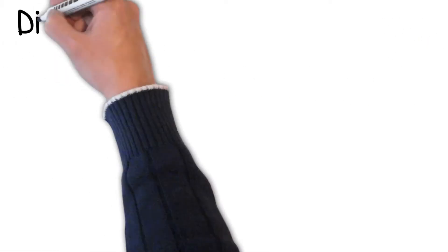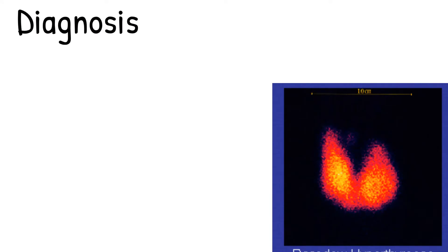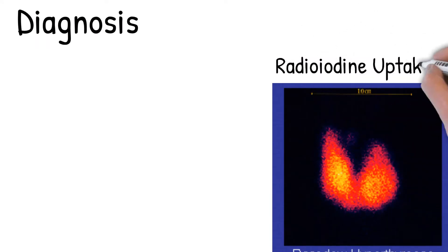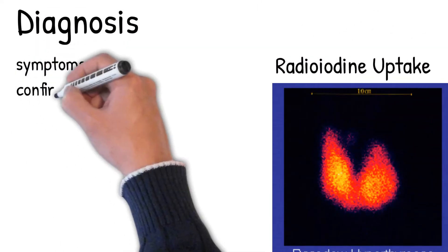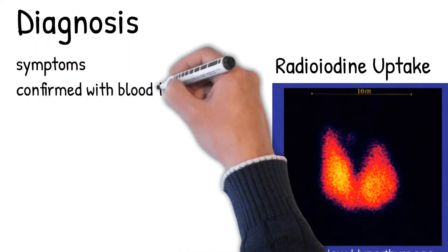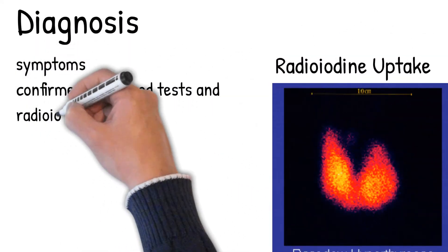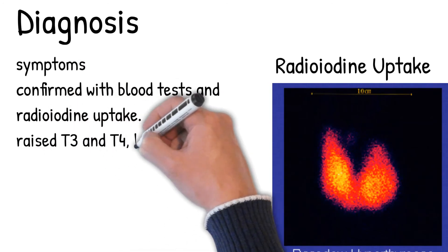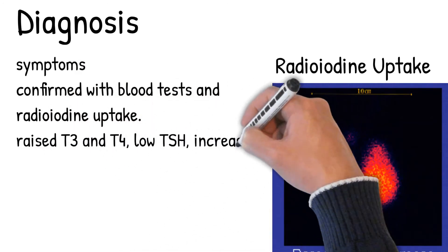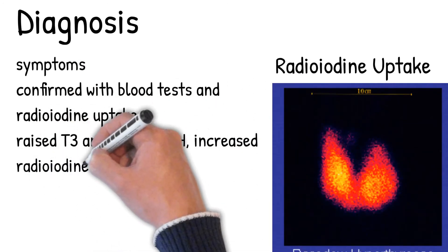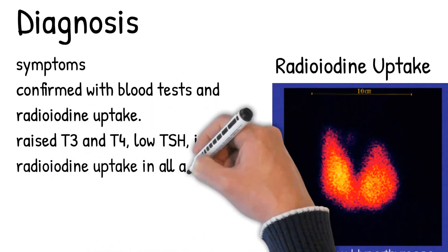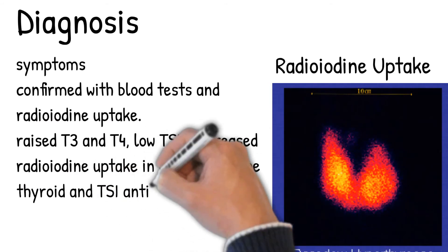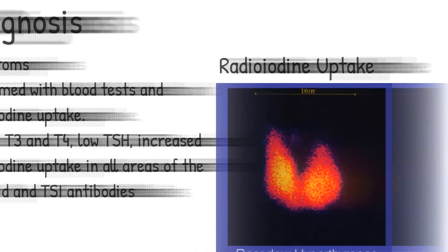The diagnosis is based on symptoms and confirmed with blood tests and radioiodine uptake. Blood tests show a raised T3 and T4, low TSH, increased radioiodine uptake in all areas of the thyroid, and TSI antibodies.